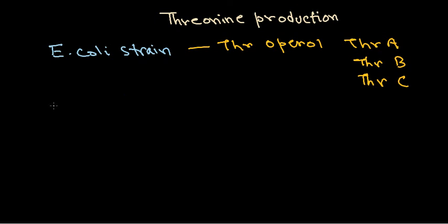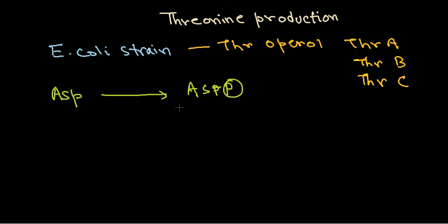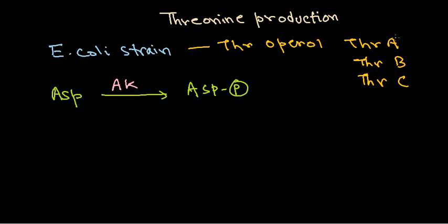The first stage is the phosphorylation of aspartate to aspartyl phosphate. From aspartate, we produce aspartyl phosphate. This process is mediated by aspartyl kinase, or aspartokinase. Here comes the role of the first gene — aspartokinase is produced at this step.